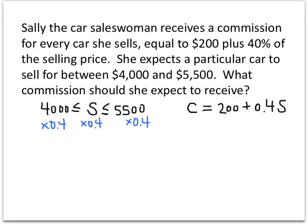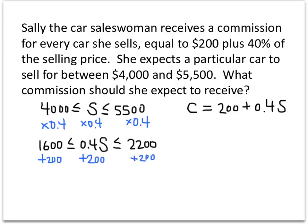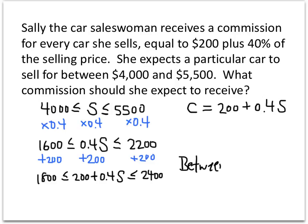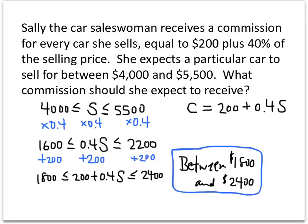4,000 multiplied by 0.4 is 1,600. In the middle I have 0.4S. And 5,500 times 0.4 is 2,200. Now I want 200 plus 0.4S in the middle, so I add 200 to everything: on the left I get 1,800, in the middle I have 200 plus 0.4S just like I wanted, and on the right I have 2,400. So the answer is that Sally should expect a commission of between $1,800 and $2,400.